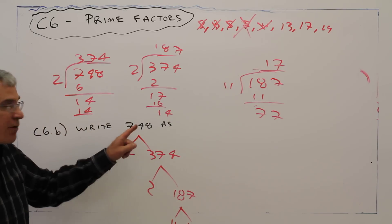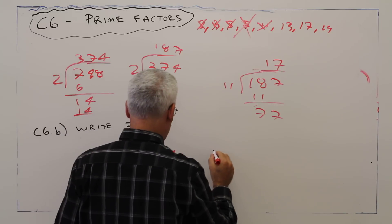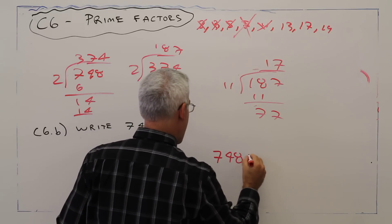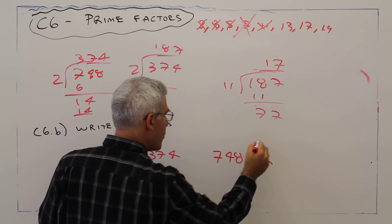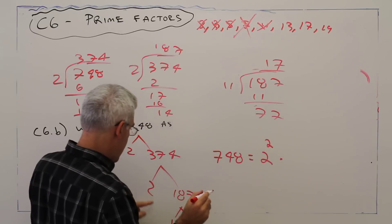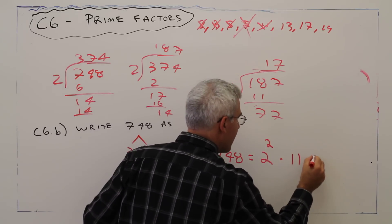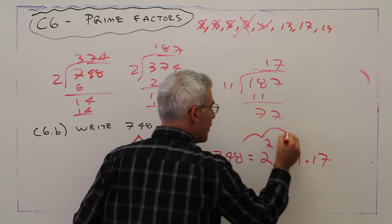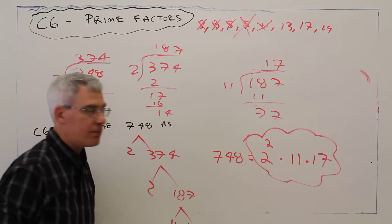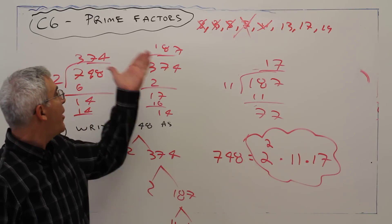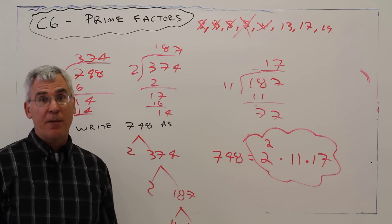Everything is prime. It said to write it as a product of primes, so 748 equals 2 squared times 11 times 17. And there you have it, more on prime factors.